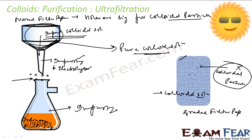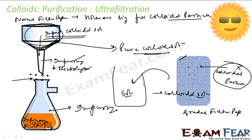The pore size of the graded filter paper can be controlled by adjusting the concentration of the colloidal solution used for impregnation — for example, using a four percent, five percent, or ten percent solution. The typical solution used is a four percent solution of nitrocellulose in a mixture of alcohol and ether, known as collodion.